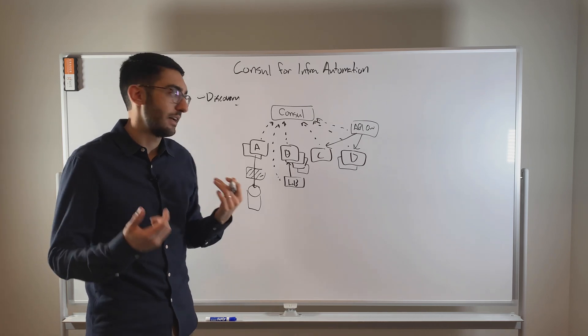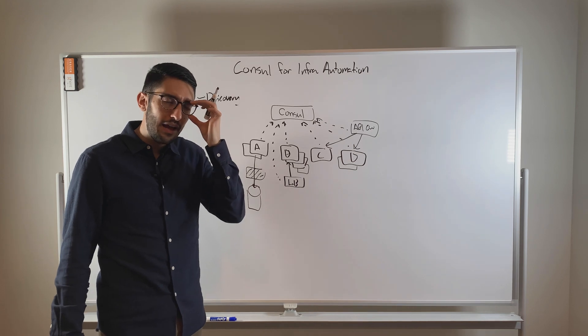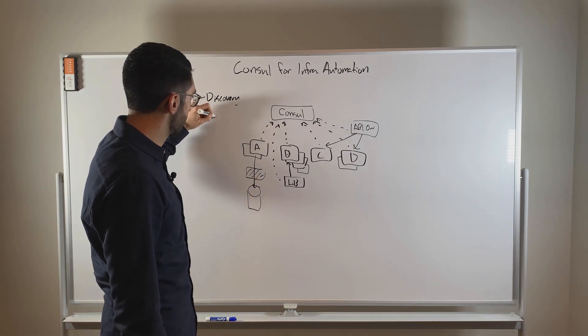What if I don't have that? Maybe I have a more traditional firewall that's not Consul aware, it can't integrate with it. And so this is where we have a use case that we refer to as network infrastructure automation.